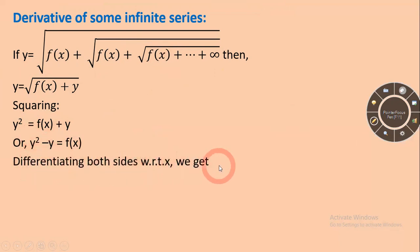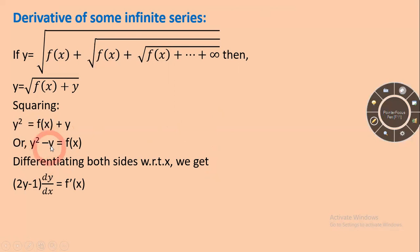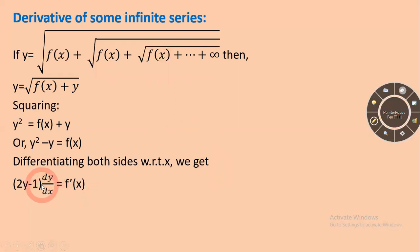Differentiating both sides with respect to x, you will get 2y dy/dx minus dy/dx equal to f'(x). Taking dy/dx as common factor gives dy/dx times (2y minus 1) equal to f'(x). So dy/dx will be equal to f'(x) upon (2y minus 1). This concept is very important.